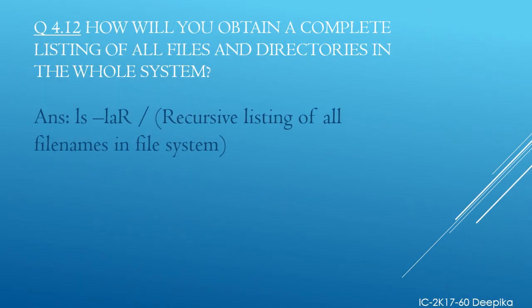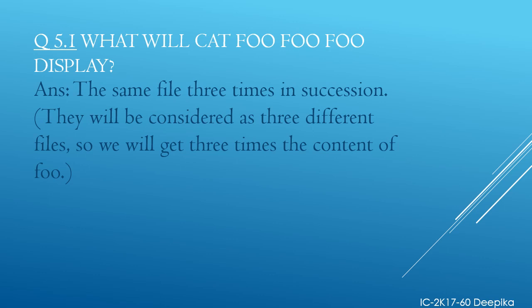Now the next question: how will you obtain a complete listing of all files and directories in the whole system? The answer is ls -laR followed by a forward slash — a recursive listing of all file names in the file system. The last question: what will cat foo foo foo display? It will display the same file three times in succession, as they will be considered as three different files, and we will get the content of foo three times.